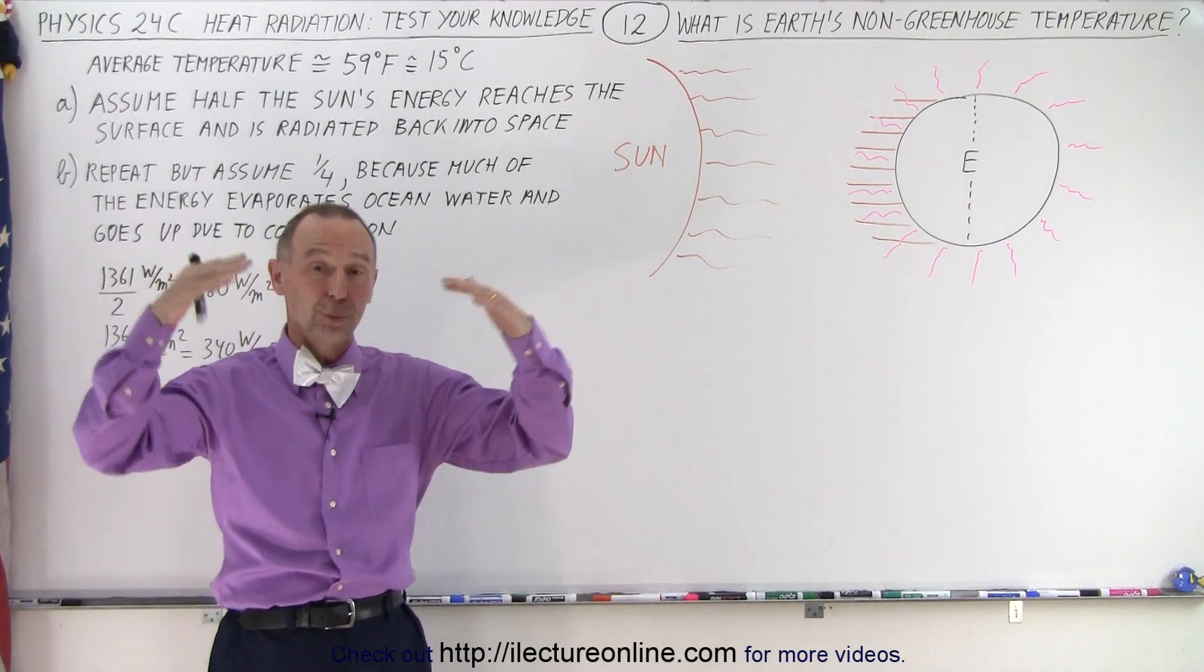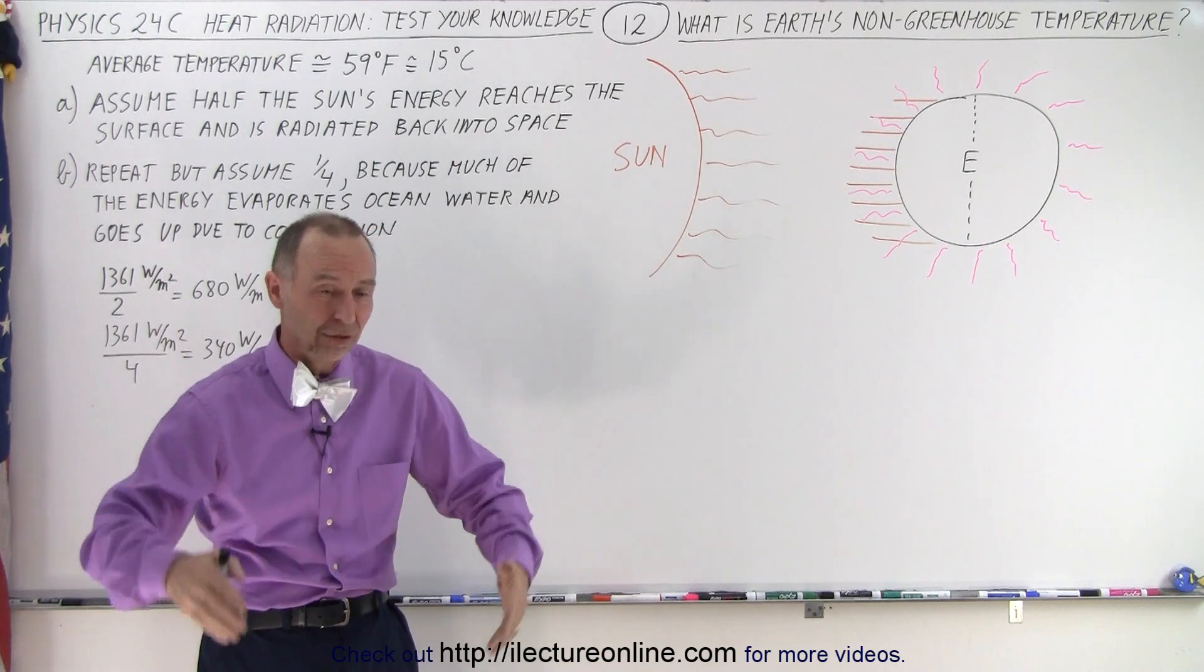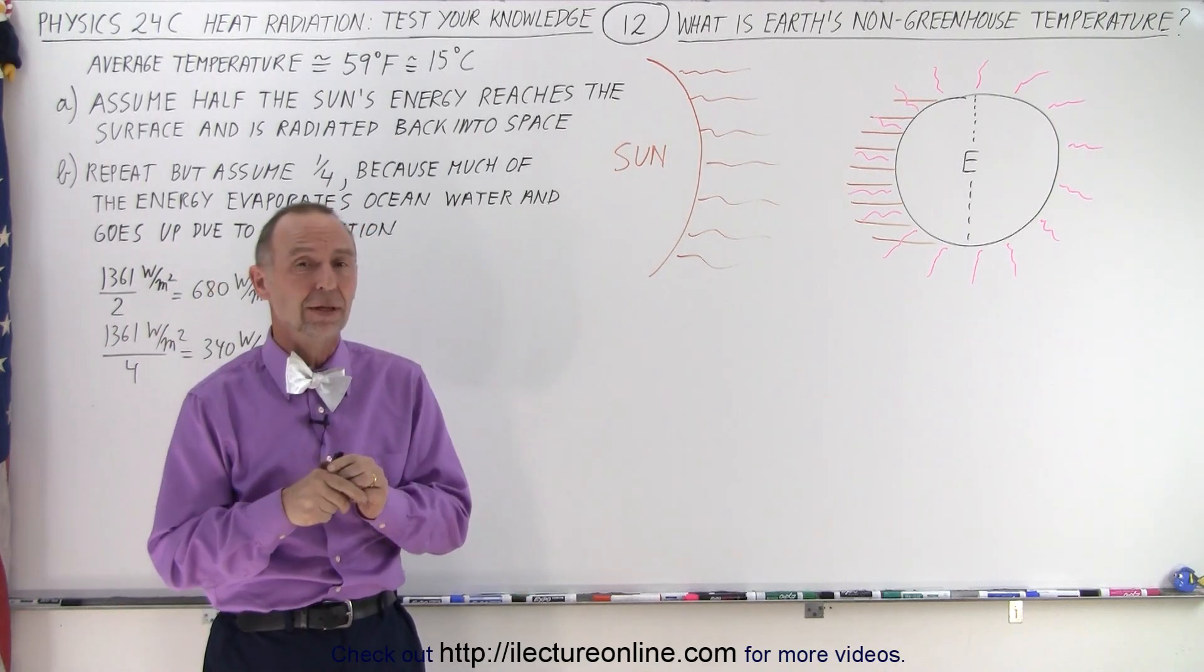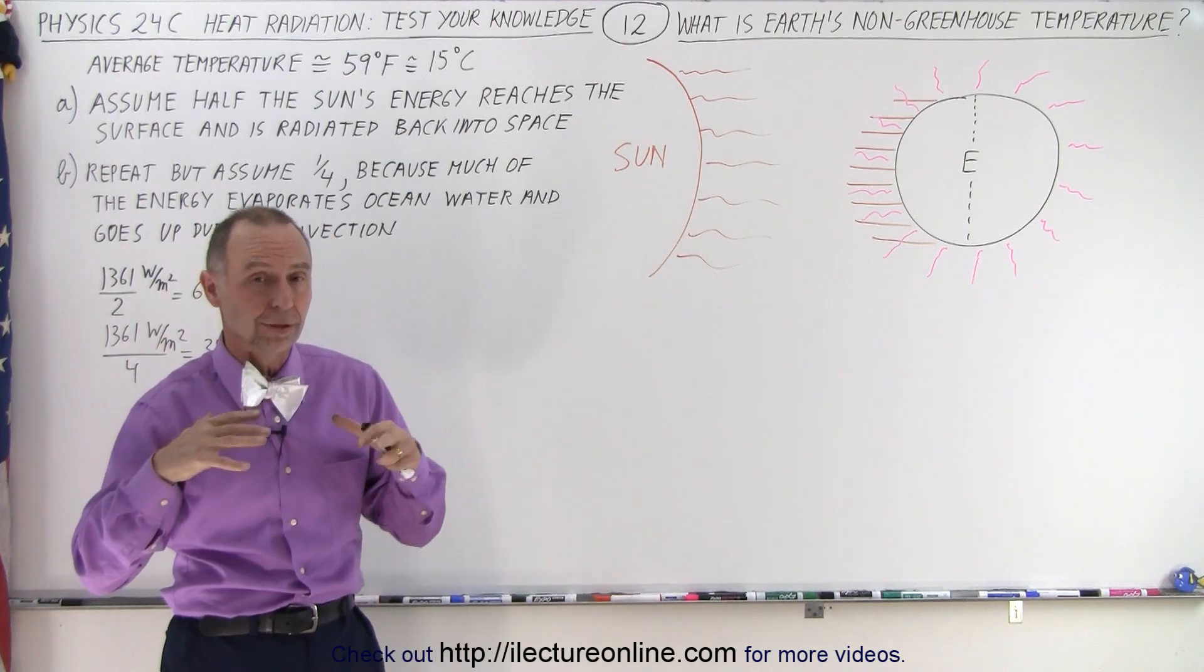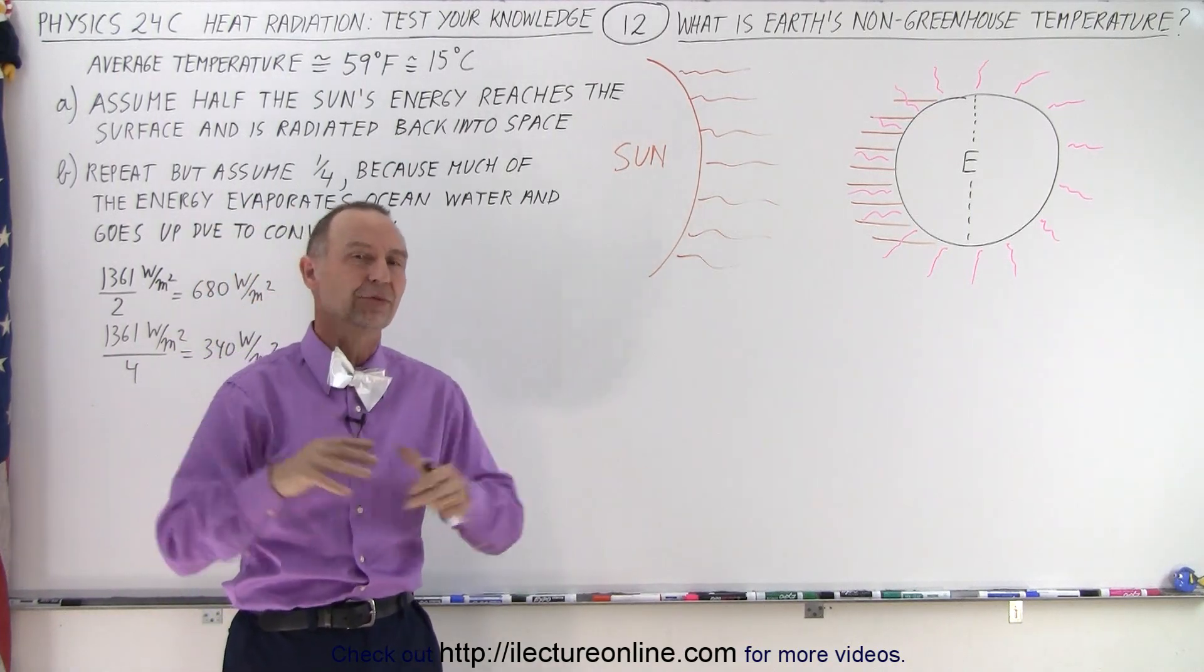A lot of the radiation that reaches the surface of the Earth and gets re-radiated back into space, well a lot of that is being held back by the greenhouse gases in the atmosphere keeping the Earth at a nice comfortable temperature.